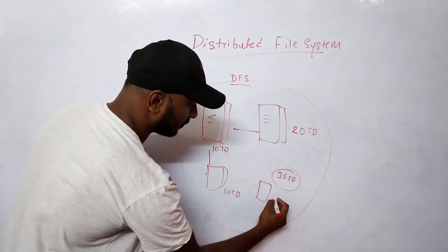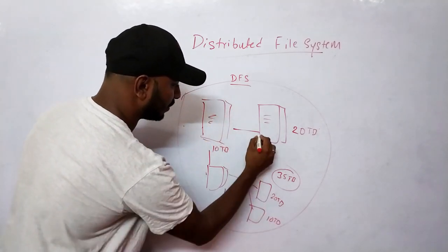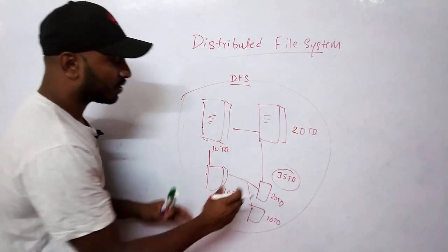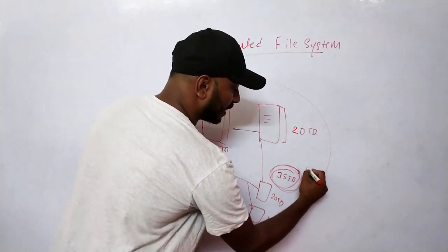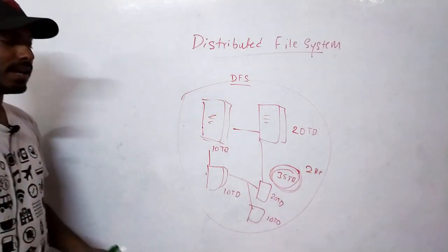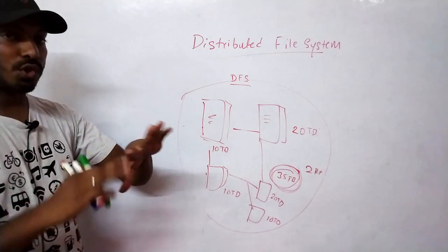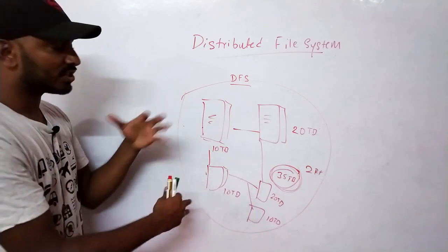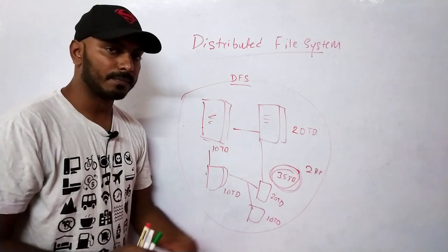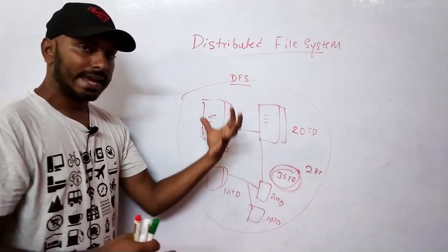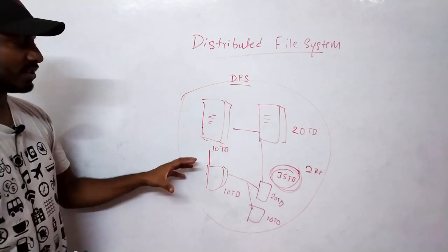You can also specify a replication factor. Say you have additional machines of 20 TB and 10 TB in the network, and you set replication factor to 2 — meaning two copies of the file exist across machines. The distributed file system is clever enough to arrange copies so that even if a couple of machines go down, you still have all pieces of the 35 TB file intact and can recover it as a whole.